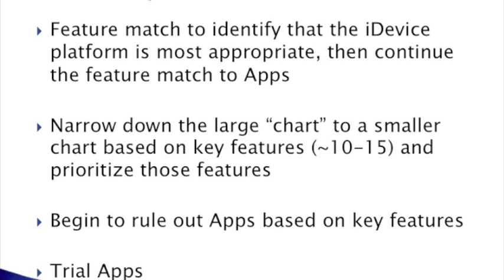Overall, we want you to feature match to identify an iDevice platform as the most appropriate and then continue to feature match to apps. We narrow down the large chart to a smaller chart based on 10 to 15 key features of the individual, and then we prioritize those features. In Nancy's case, word prediction was a key feature. Logical letter encoding and abbreviation expansion were also important, yet none of the apps had those options at the time of the assessment, so we had to prioritize. We then begin to rule out apps based on these key features.